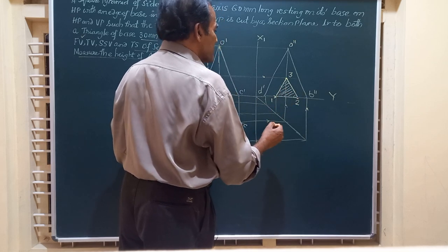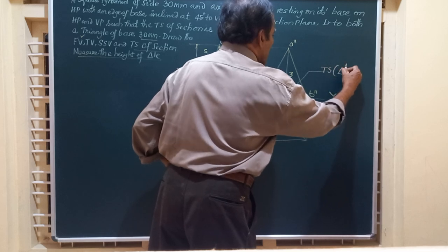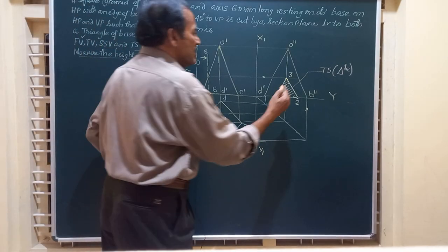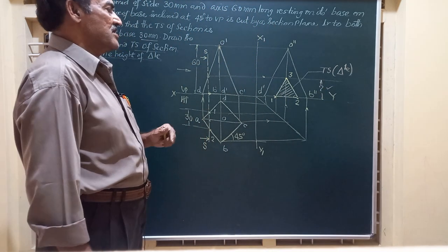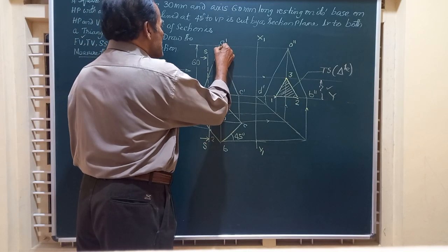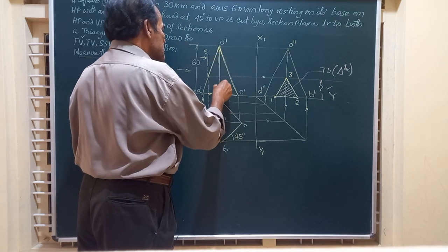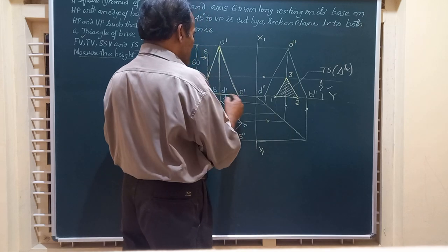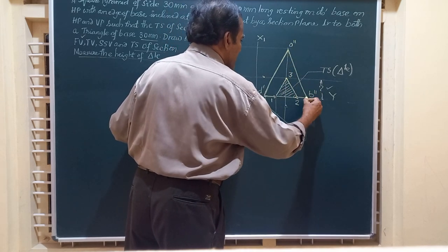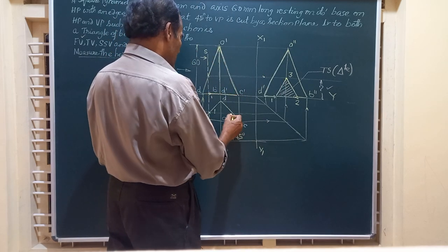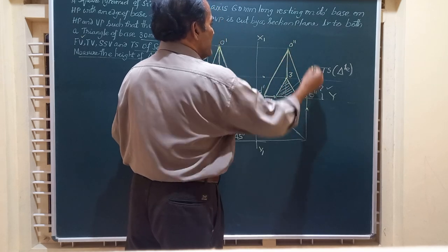Join all three points by straight lines — point 3 to 1, point 3 to 2, and point 1 to 2. Then hatch the section by drawing lines at 45 degrees to the horizontal. This is the true shape obtained in the end view — a triangle. We are asked to find the height of this triangle, which can be measured using a scale. The portion retained after sectioning is shown by visible lines.